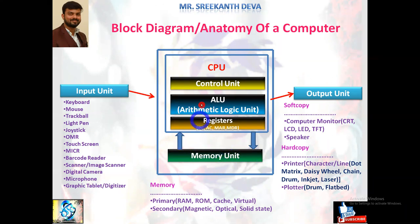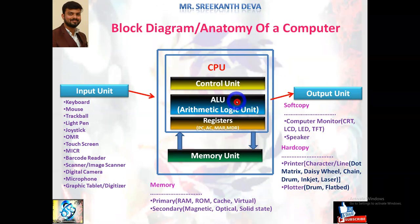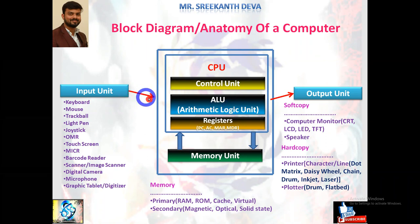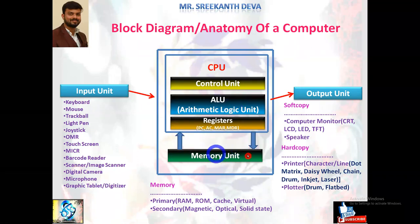Data is first stored into main memory, then the processor starts processing data. The control unit transfers data from the memory unit to the arithmetic logical unit, which performs arithmetic operations like addition, subtraction, multiplication, and division, as well as logical operations like AND, OR, and NOT. After processing, the data and instructions are stored back in the memory unit, and the control unit then passes that processed information to output devices.